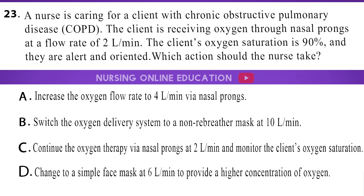A nurse is caring for a client with COPD receiving oxygen through nasal prongs at 2 liters per minute. The client's oxygen saturation is 90%, and they are alert and oriented. Which action should the nurse take? A. Increase the oxygen flow rate to 4 liters per minute via nasal prongs. B. Switch the oxygen delivery system to a non-rebreather mask at 10 liters per minute. C. Continue the oxygen therapy via nasal prongs at 2 liters per minute and monitor the client's oxygen saturation. D. Change to a simple face mask at 6 liters per minute to provide a higher concentration of oxygen.